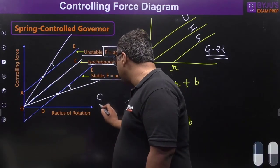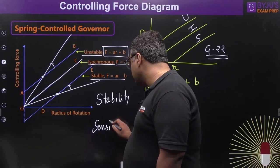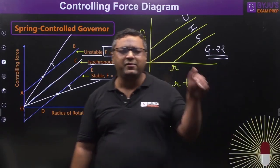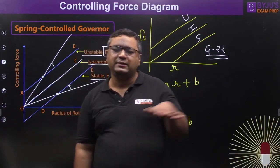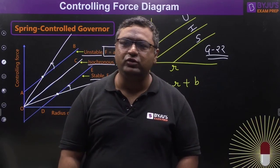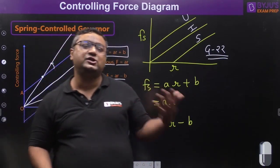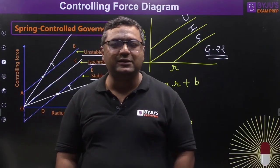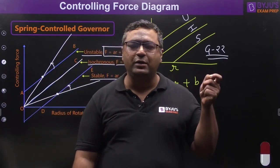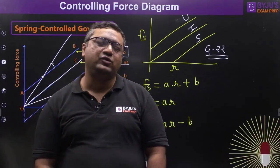Stability and sensitivity are inverse properties: if stability is more, sensitivity is less, and vice versa. So exam questions may also be framed in terms of sensitivity. This is how questions are asked from controlling force diagrams. Thanks for watching — the next session will cover another concept in this series. Comment your preferred topic for a special concept capsule, like the session, share it with your friends, and subscribe to the channel. Goodbye!